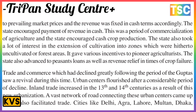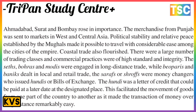A vast network of roads connecting urban centers came up, which also facilitated trade. Cities like Delhi, Agra, Lahore, Multan, Dhaka, and Surat grew in importance. Merchandise from Punjab went to markets in west and central Asia. Political stability and relative peace established by the Mughals made it possible to trade considerably among the cities of the empire. Coastal trade also flourished during this time.